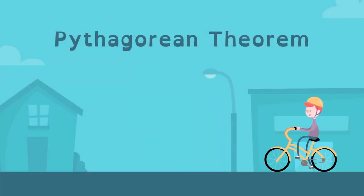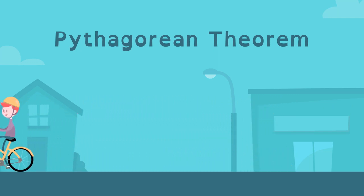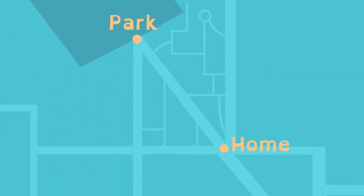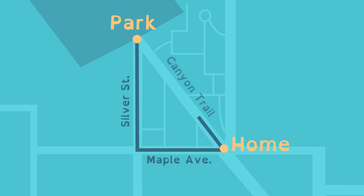The Pythagorean Theorem helps people solve real-world problems. Lucy usually bikes to the park along Maple Avenue, then up Silver Street. Is Canyon Trail shorter?